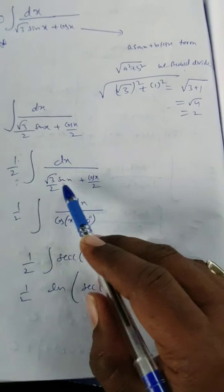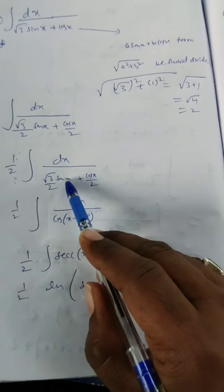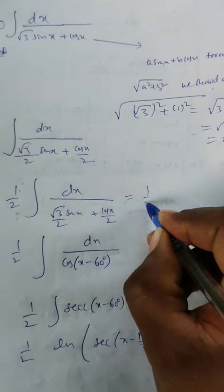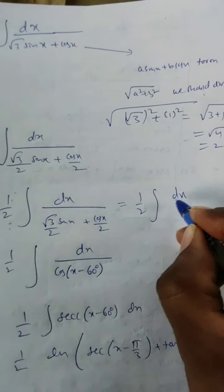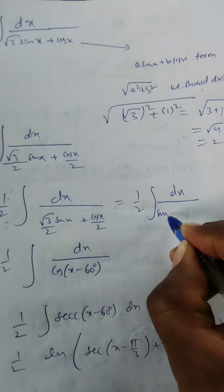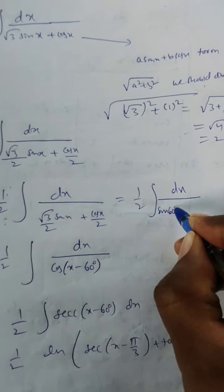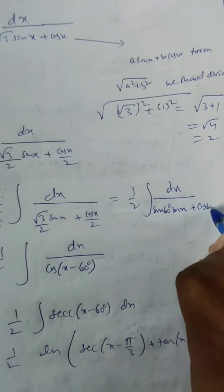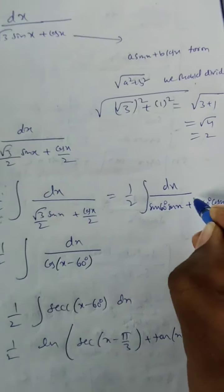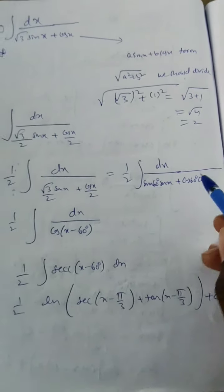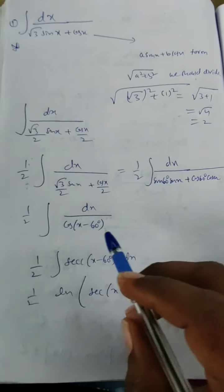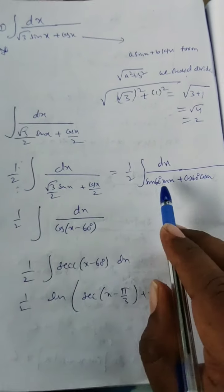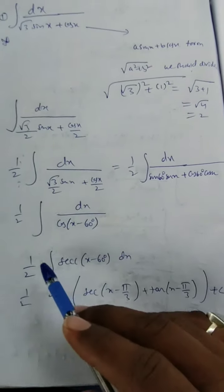We have sin 60° · sin x + cos 60° · cos x, which matches the cos(a − b) formula: sin a · sin b + cos a · cos b = cos(a − b). So the denominator becomes cos(x − 60°), and the integral is (1/2) ∫ dx / cos(x − 60°).